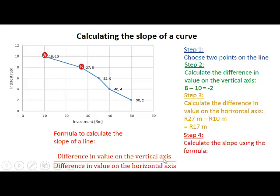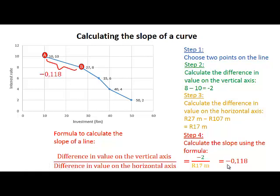Step 4 is to use the formula. It is the difference in value on the vertical axis, minus 2, divided by the difference in value on the horizontal axis, 17. That gives us minus 2 divided by 17, which is equal to minus 0.118.